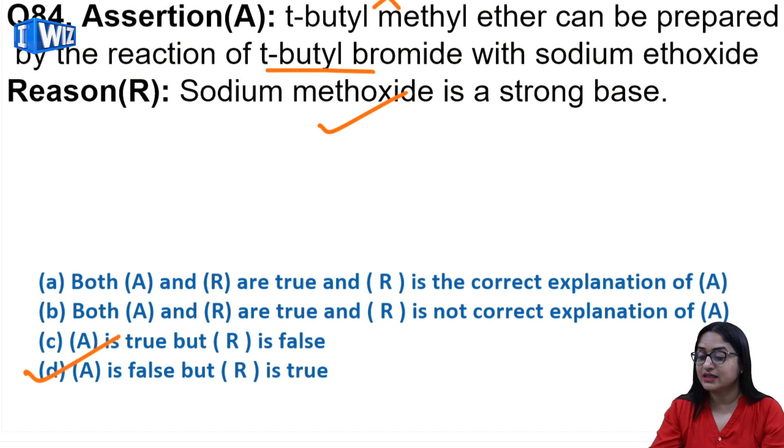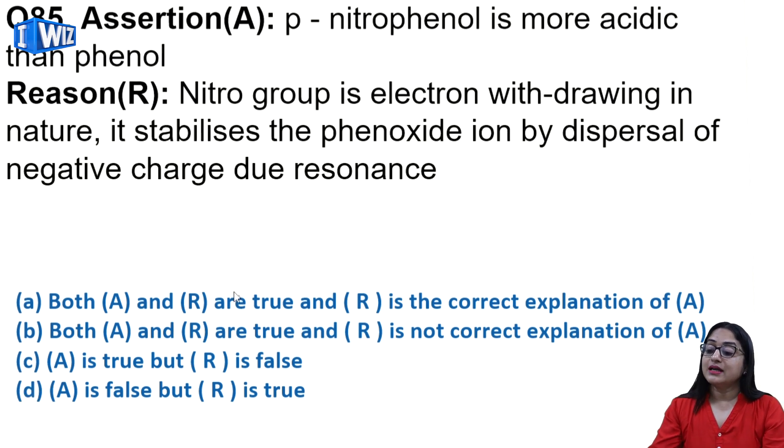Assertion: para-nitrophenol is more acidic than phenol. Yes, because electron withdrawing groups make the compound more acidic. This is true. Reason says nitro group is electron withdrawing in nature, it stabilizes the phenoxide ion by dispersal of negative charge due to resonance. This is also true. Both statements are true and this reason is the correct explanation, so A would be the correct option.